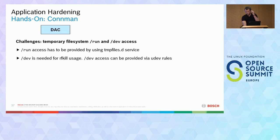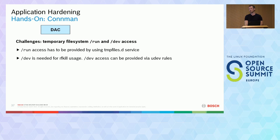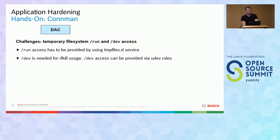Some challenges arose when changing from root to a dedicated user — some things stopped working. We had to add dbus communication permissions and change access to temporary directories like /run and /dev. We changed the dbus configurations for Connman and for the VPN applicant, adding the conman user. For temporary file systems we had to enable access via tmpfiles.d and udev rules so that access is re-established on every startup. Knowing the functionality of your service well — which files are accessed and manipulated — makes these changes relatively fast; otherwise it takes time.